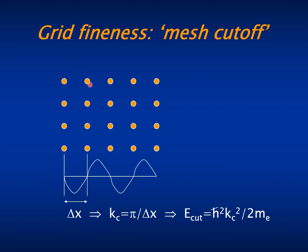We measure this fineness by the maximum energy of a plane wave that can be represented in that grid, which is given by this simple formula as a function of the grid spacing.